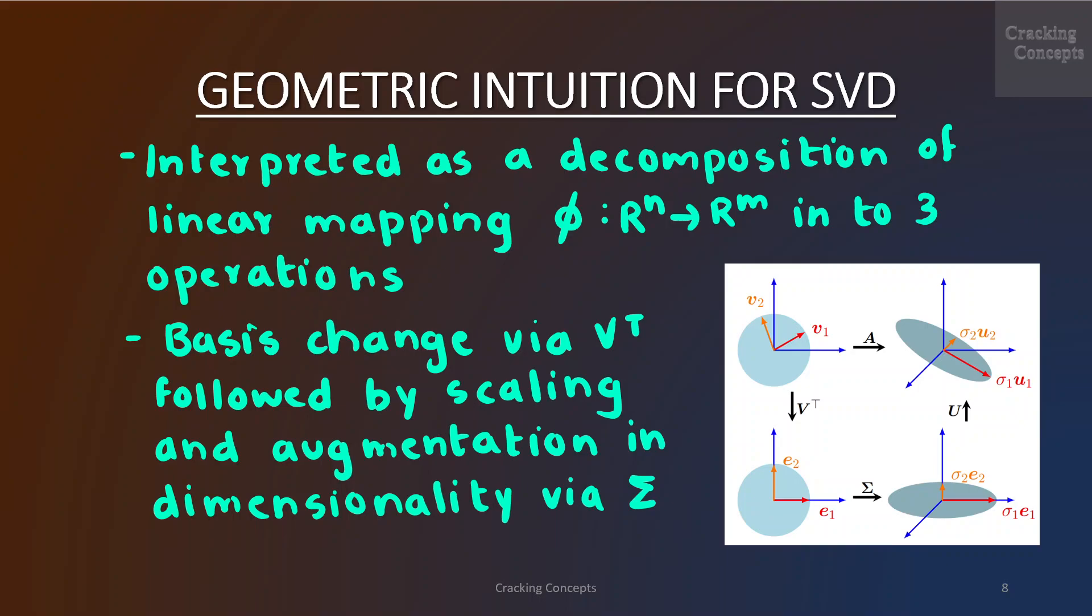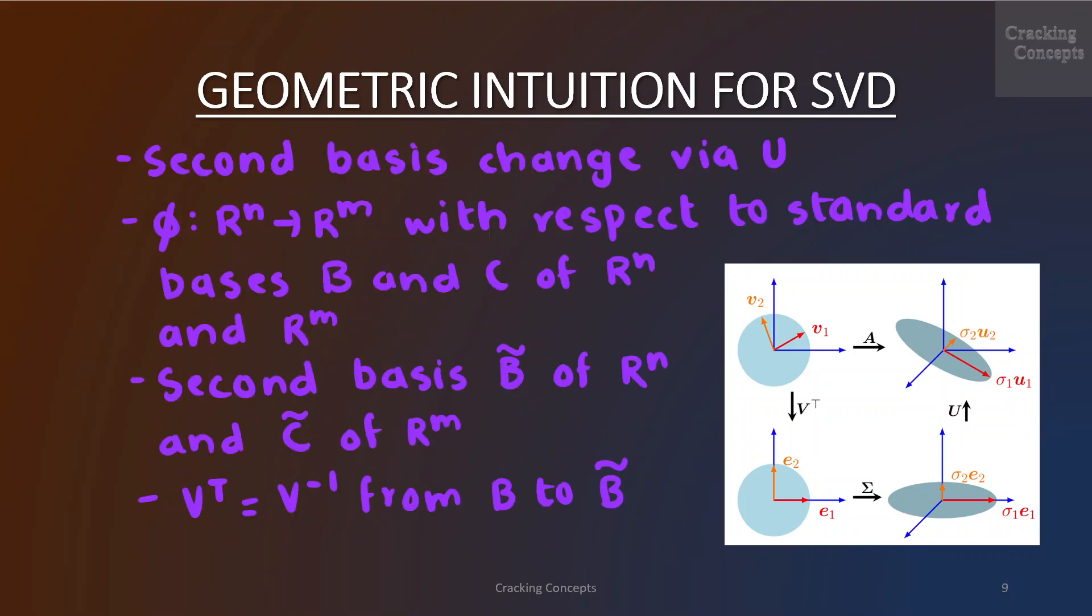The SVD intuition follows superficially a similar structure to our eigendecomposition intuition. Broadly speaking, the SVD performs a basis change via V transpose, followed by scaling and augmentation or reduction in dimensionality via the singular value matrix Σ, and finally it performs a second basis change using U.